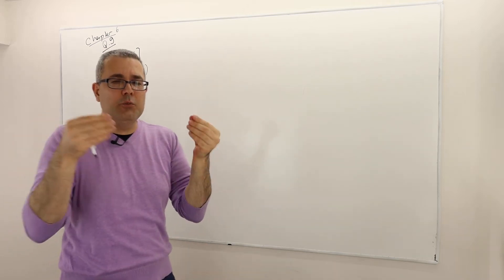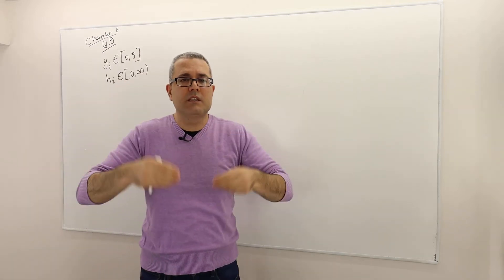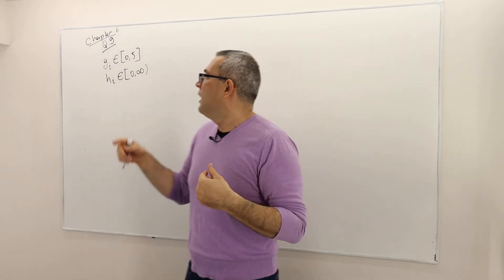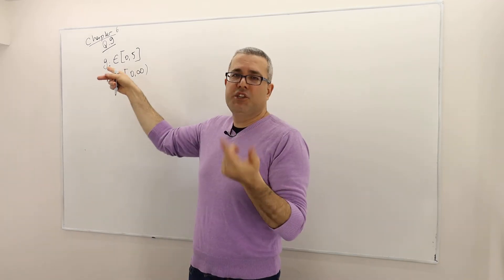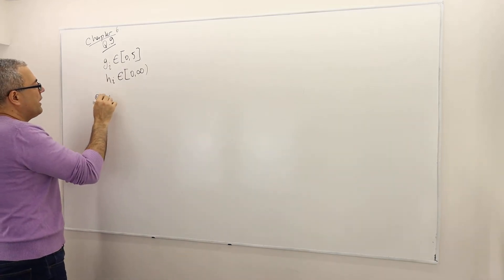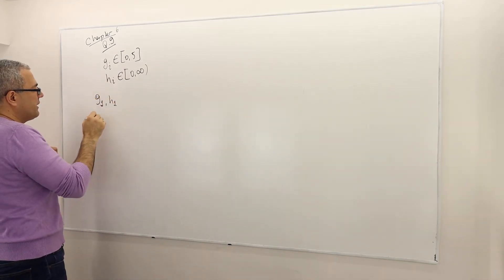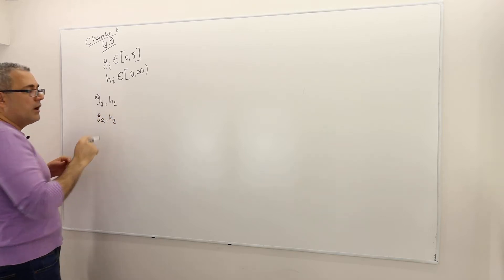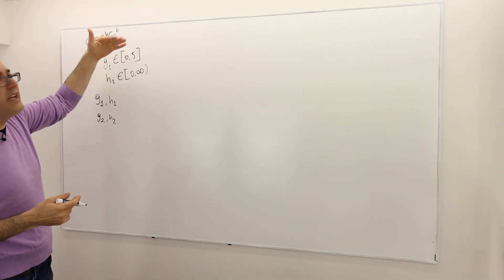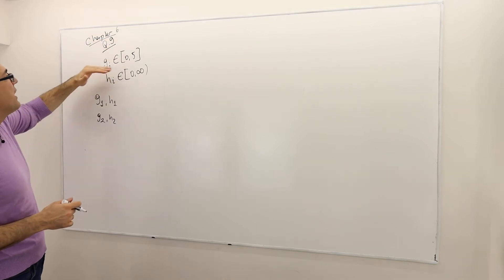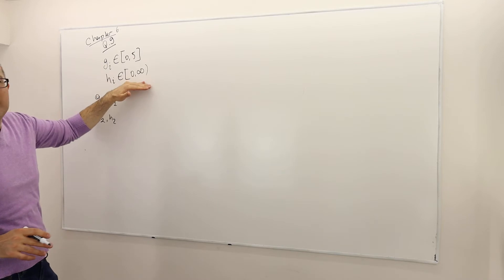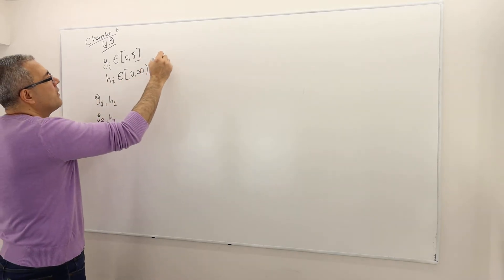Two players simultaneously and independently choose g_i and h_i. Player 1 selects (g1, h1) and player 2 selects (g2, h2). So there are four things to choose, but how many strategies do they have? Infinitely many, because g_i can be anything between 0 and 5, and h_i can be anything between 0 and infinity. So i is 1, 2.